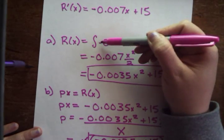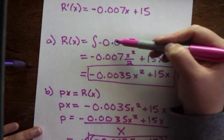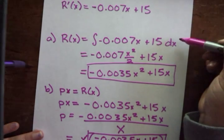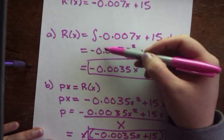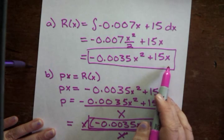So we find the integral of exactly what they gave us, the integral of negative 0.007x plus 15. And we're doing that with respect to x. We follow our integration rules and simplify, and that gives us this here.